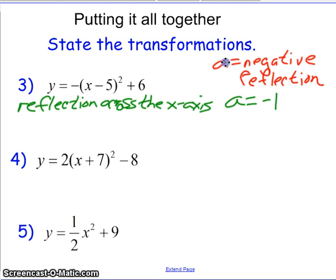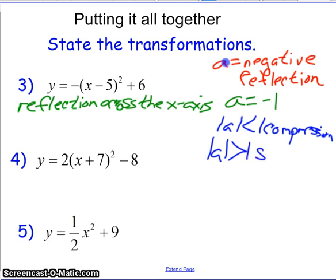Now, if A, the absolute value of A is less than one, that would be a compression. And if the absolute value of A is greater than one, it's a stretch. So in this case, the absolute value of A is one. So that means we're neither compressing or stretching. We are translating, however.